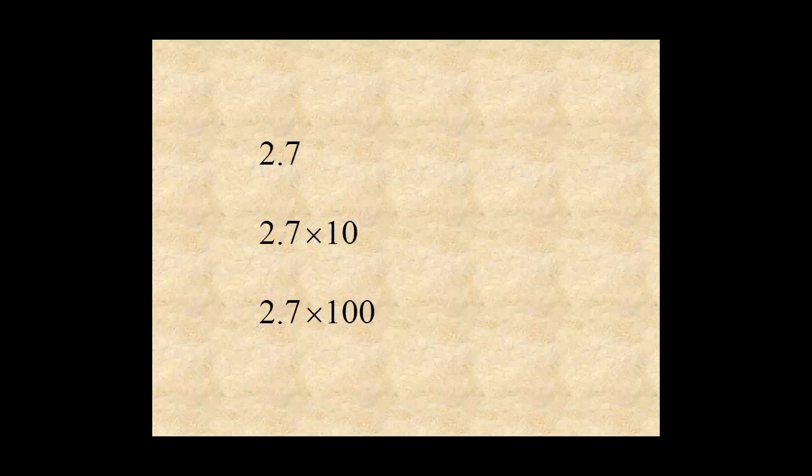But first, let's remember a basic idea about decimals. When you multiply a number by powers of ten, the number gets bigger, and you move the decimal point to the right. For example, if you multiply 2.7 by 10, it gets bigger by one decimal place, and you have 27. If you multiply by 100, it gets bigger by two decimal places, and you have 270.